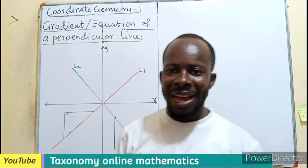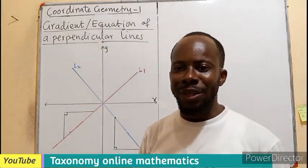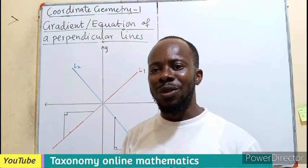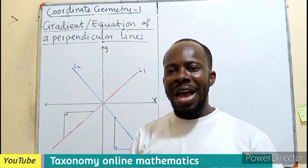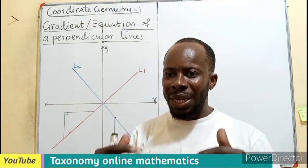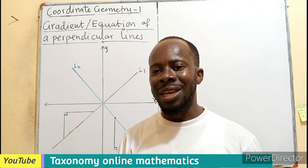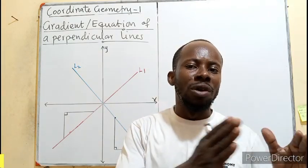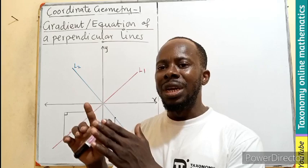Hello viewers, welcome to another exciting episode on Coordinate Geometry 1. And in this episode, we'll be dealing with why they say the perpendicular line or two perpendicular lines have their gradient multiplied to give us what? Negative 1.